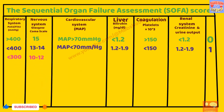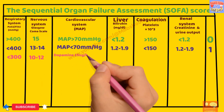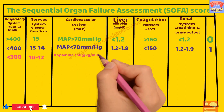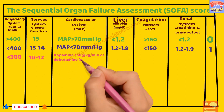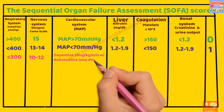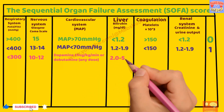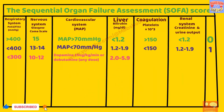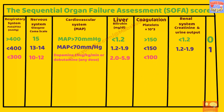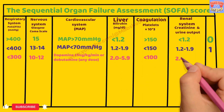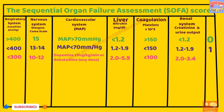If the patient is on dopamine less than 5 microgram per kg per minute or dobutamine at any dose, bilirubin is 2 to 5.9, platelet count less than 1 lakh, and creatinine is 2 to 3.4, then the SOFA score will be 2.